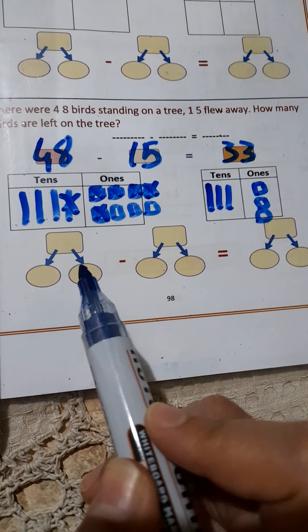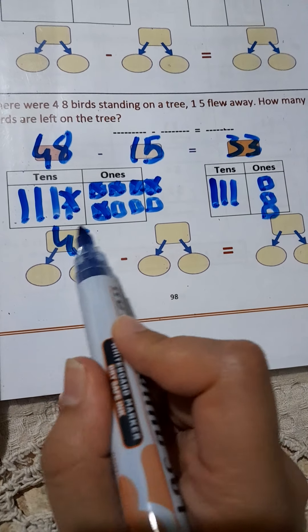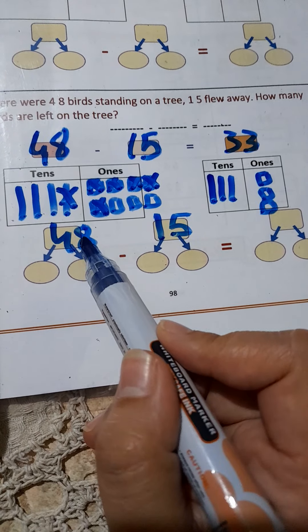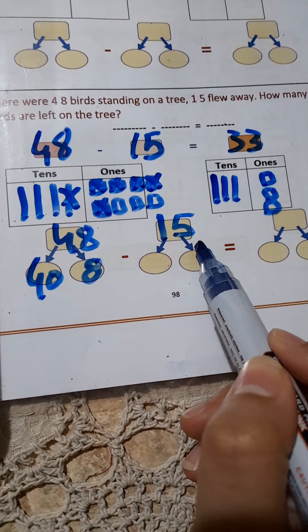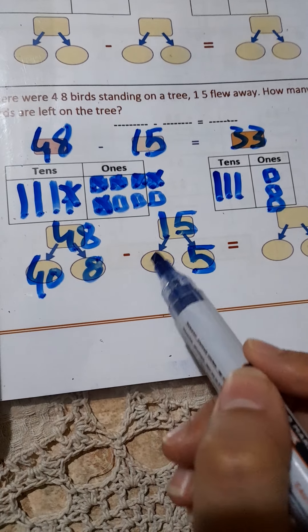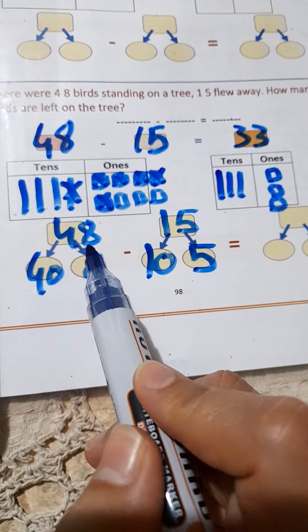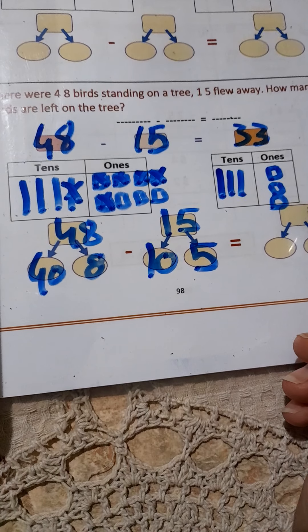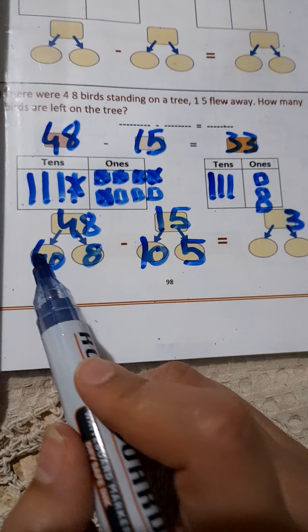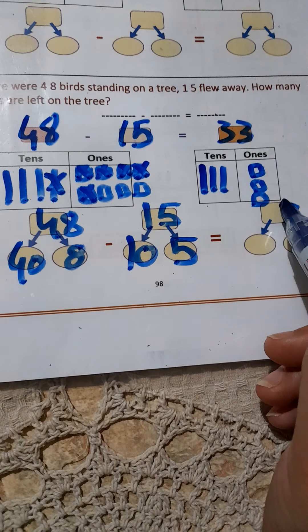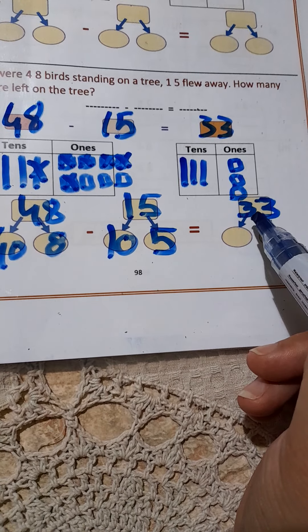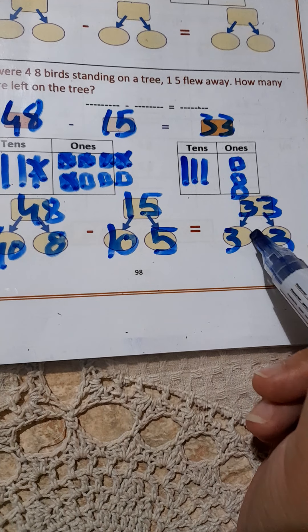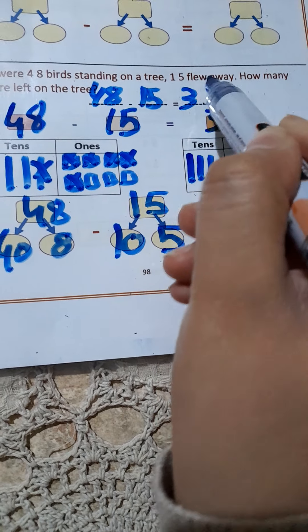Now, I will use decomposing to find the result. 48 minus 15. The value of 8 is 8. The value of 4 is 40. The value of 5 is 5. The value of 1 is 10. Now, 8 minus 5 equals 3. Then, 4 minus 1 equals 3. Decompose 33: the value of 3 is 3, and the value of the other 3 is 30. So, 48 minus 15 equals 33.